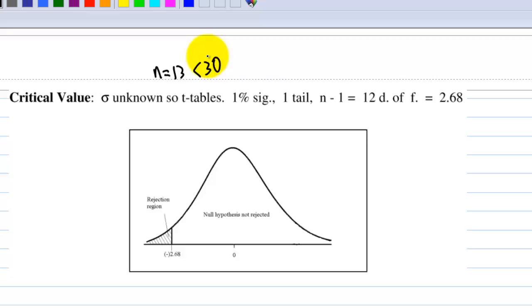With 1% significance level and 1-tail, for t-table, there is a degree of freedom which is equal to n minus 1 or 13 minus 1, which is 12.